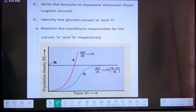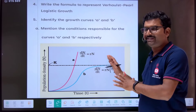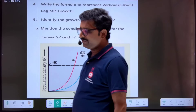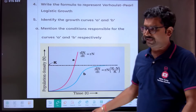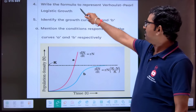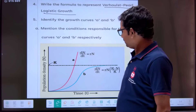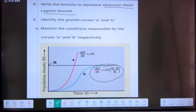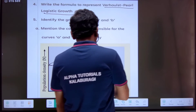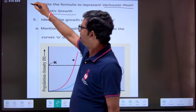Next question: write the formula. This graph is given in your NCERT textbook — the formula to represent the logistic growth, also called the sigmoid growth curve, expressed mathematically. You have to represent your answer for two marks. This might be asked for two marks.